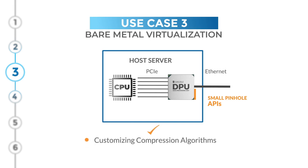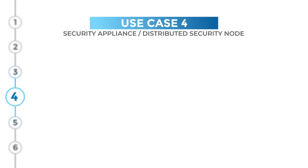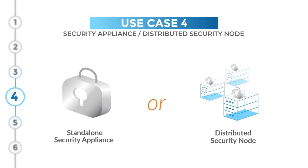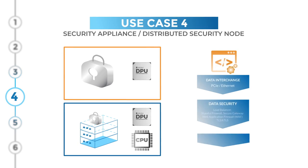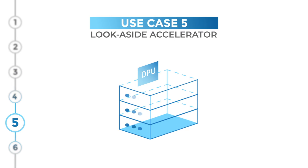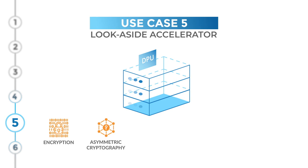The Fungible DPU can also serve as a standalone security appliance or a distributed security node in host servers, operating as a security hub that delivers comprehensive protection for data entering and exiting data centers and data moving laterally within servers. It can also act as a look-aside accelerator, offloading the CPU for functions such as encryption, asymmetric cryptography, compression for both text and images, deep packet inspection, and filtering.